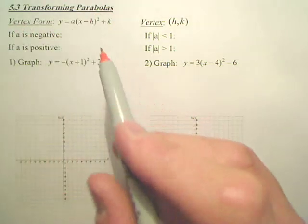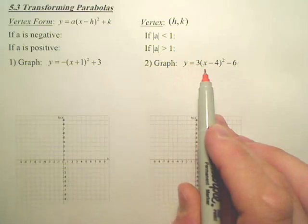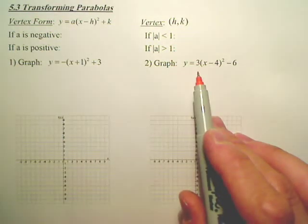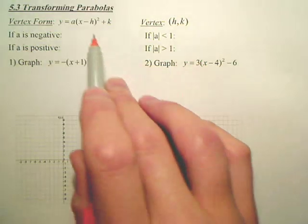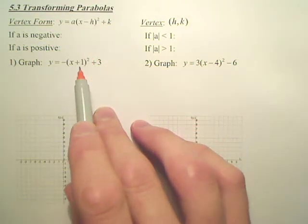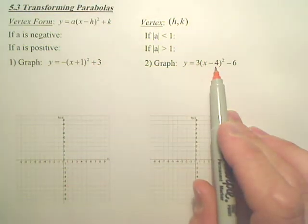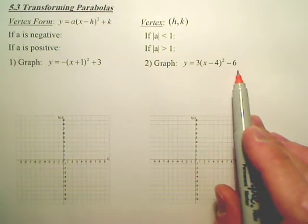Okay, this is vertex form. These two graphs are in vertex form. A is a number in front. H is that number in the parenthesis. K is a number by itself at the end.